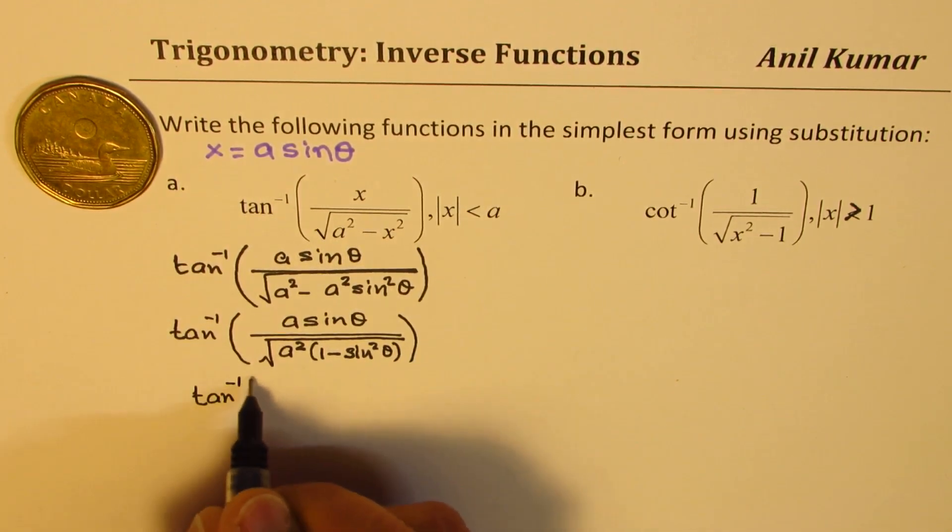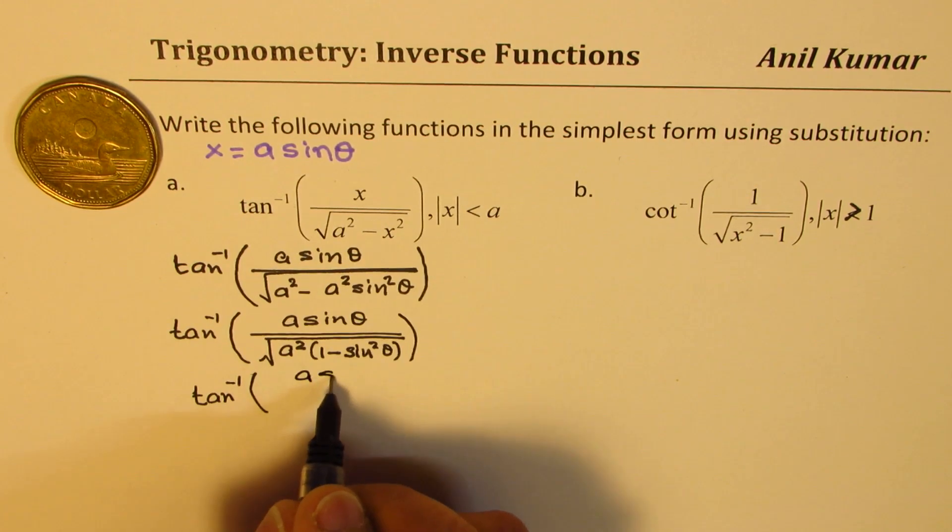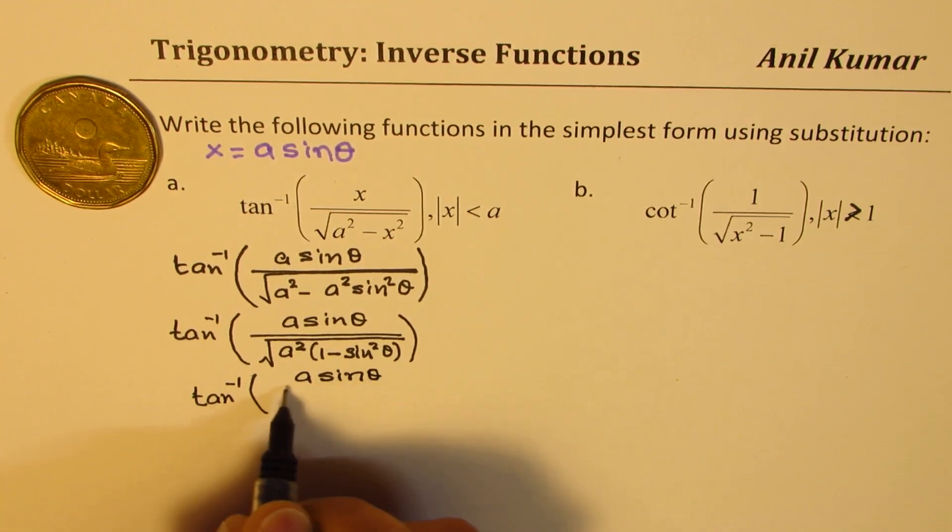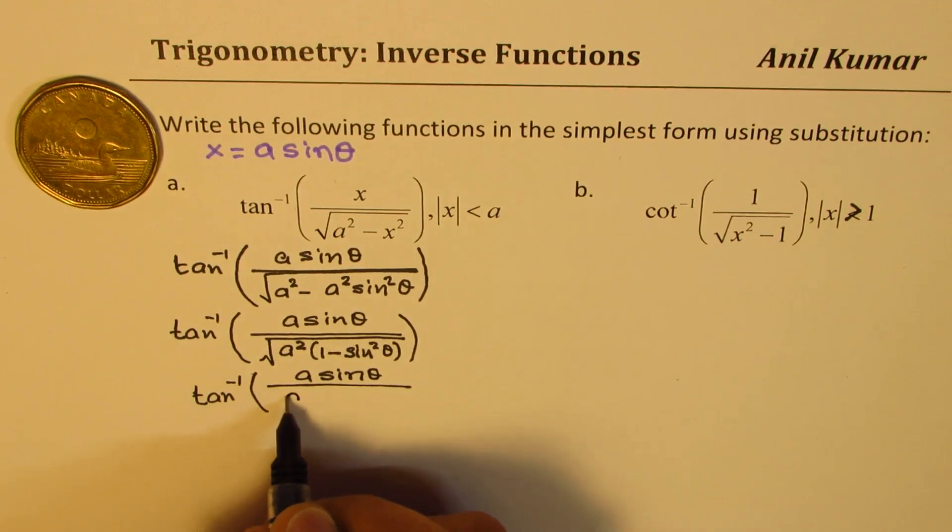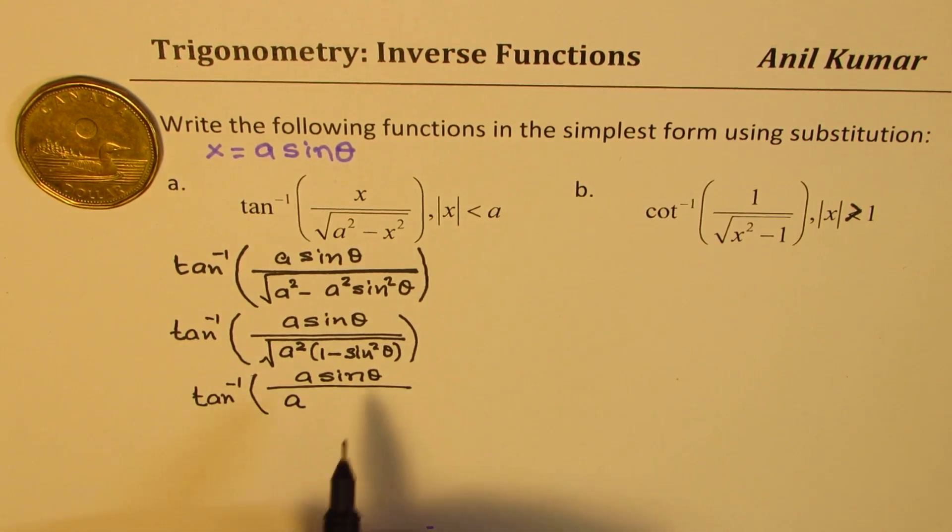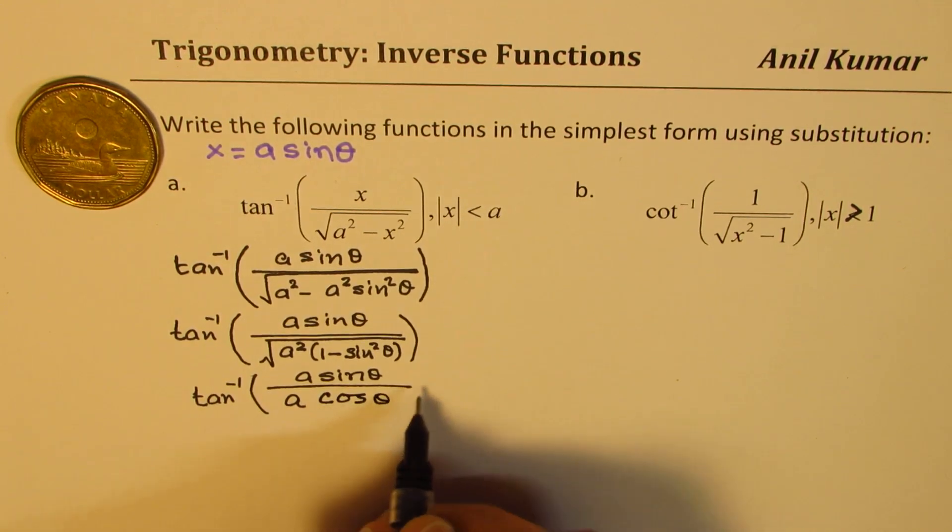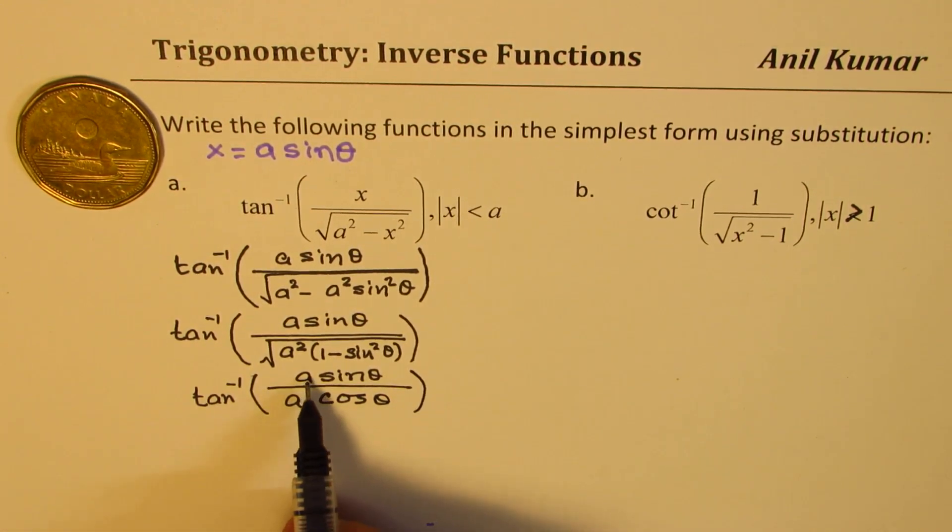So that gives you tan inverse of a sin theta in the numerator. Here a can be taken out, so you get a here, and 1 minus sin square theta is cos square theta. So that means I could write this as cos theta.